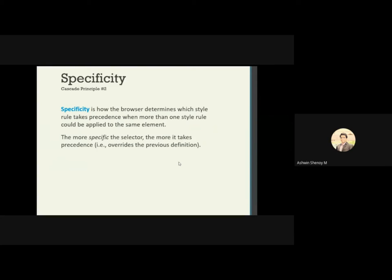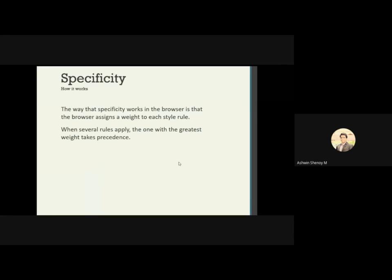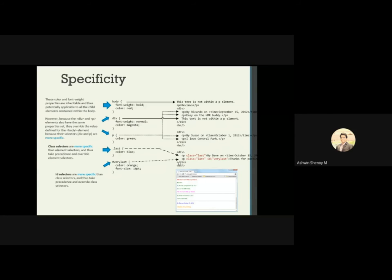Specificity determines which style rule takes precedence when one or more style rules could be applied to the same element. The more specific the selector, the more precedence it takes. The browser assigns a weight to each style rule — when several rules apply to the same element, the one with the greatest weight takes precedence. The one with less weight is overridden.